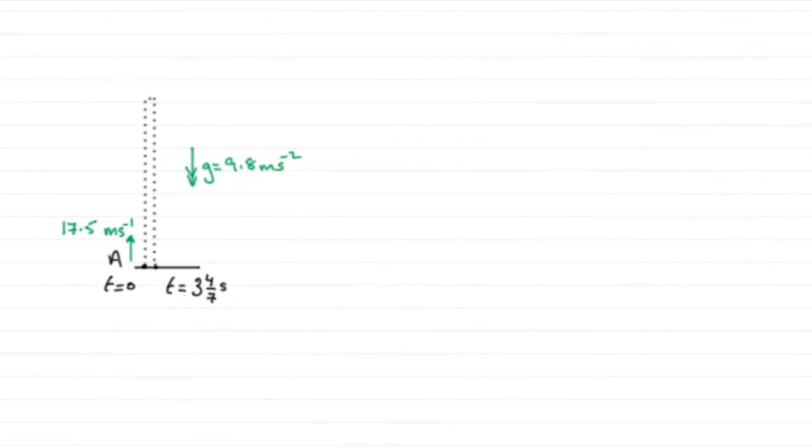Now this last part, we've got to find the length of time for which the stone is at least six and three-fifths meters above A. So let's just put that point A in. Let's just say that A is somewhere at that kind of level. That is six and three-fifths meters, that distance from there back down to where A is.